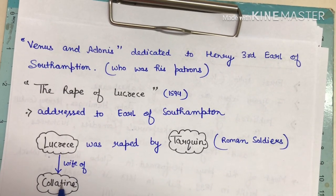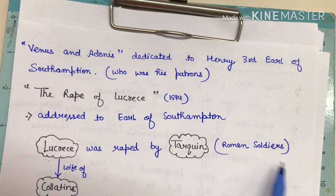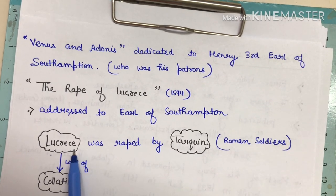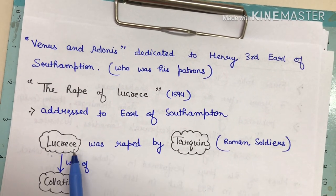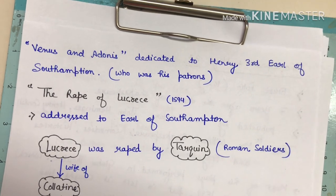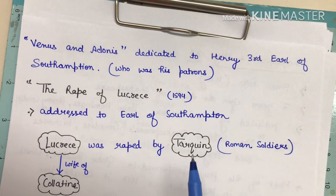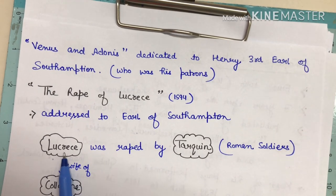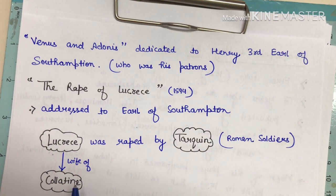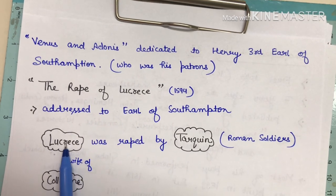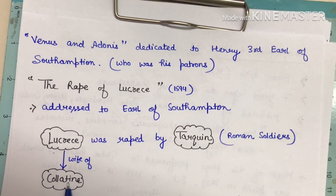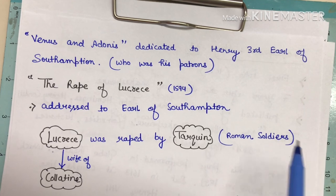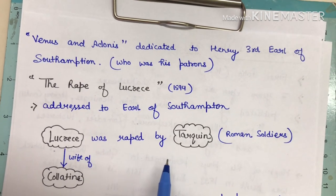The Rape of Lucrece is addressed to the Earl of Southampton. Lucrece is the wife of Collatine. Collatine and Tarquin were Roman soldiers. One day Collatine tells Tarquin that his wife Lucrece is very beautiful. Tarquin became obsessed with her and went to their house at night. Lucrece welcomed him because he was her husband's friend, but Tarquin raped her. When Collatine discovered this he wanted revenge, but meanwhile Lucrece killed herself.